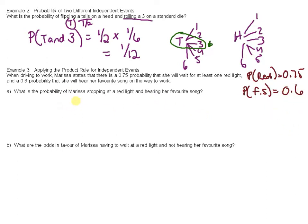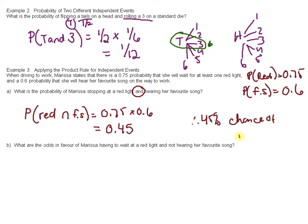What is the probability of Marissa stopping at a red light and hearing her favorite song? So the probability of a red light and favorite song, again, that's just the product rule. These two things happen independently of one another. Therefore, we can multiply them to see the probability of them happening at the same time. 0.45. So she has a 45% chance of red and favorite song.